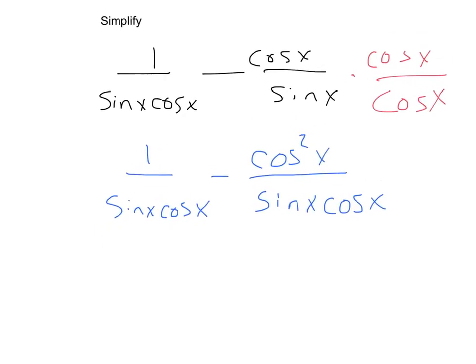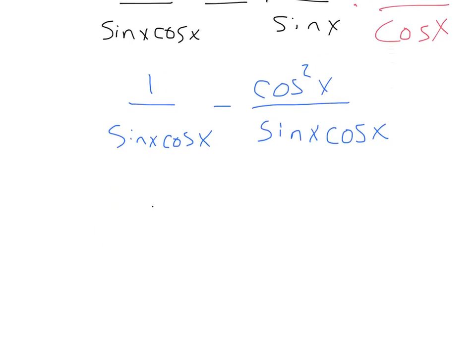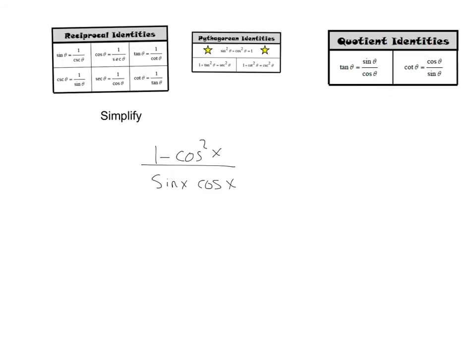Now that we've got common denominators, let's put those together. That will be 1 minus cosine squared x all over sine x cosine x. Alright, what can we do from here? I see a 1 and a cosine squared x. Whenever you start seeing ones and trig functions squared, you might want to think Pythagorean identities.